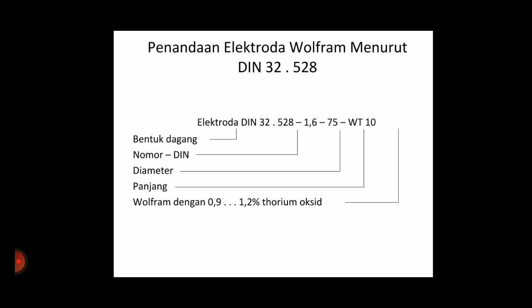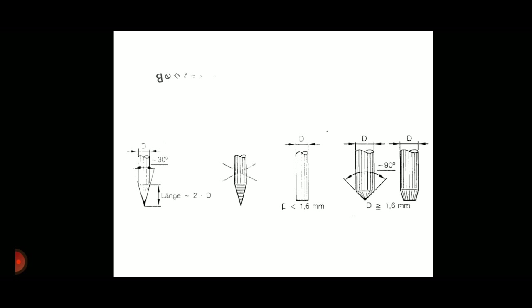Kode ini saya jelaskan. Elektroda untuk DIN, nomor DIN. Terus ada diameternya itu 1,6 - diameter 1,6 mm, panjang 75, terus wolfram kandungan wolframnya antara 0,9 sampai 2 mm. Untuk ujungnya ini saya jelaskan lagi. Untuk ujungnya, ini untuk ngelas antara ngelas baja karbon dengan aluminium berbeda.